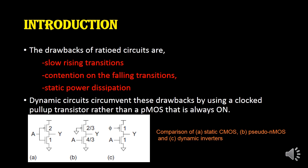First, let us see why we go for dynamic circuits. In static circuits, we studied ratioed circuits. The main drawbacks of ratioed circuits are slow rising transition, contention on the falling transition, and static power dissipation. To overcome these drawbacks, we go for dynamic circuits.